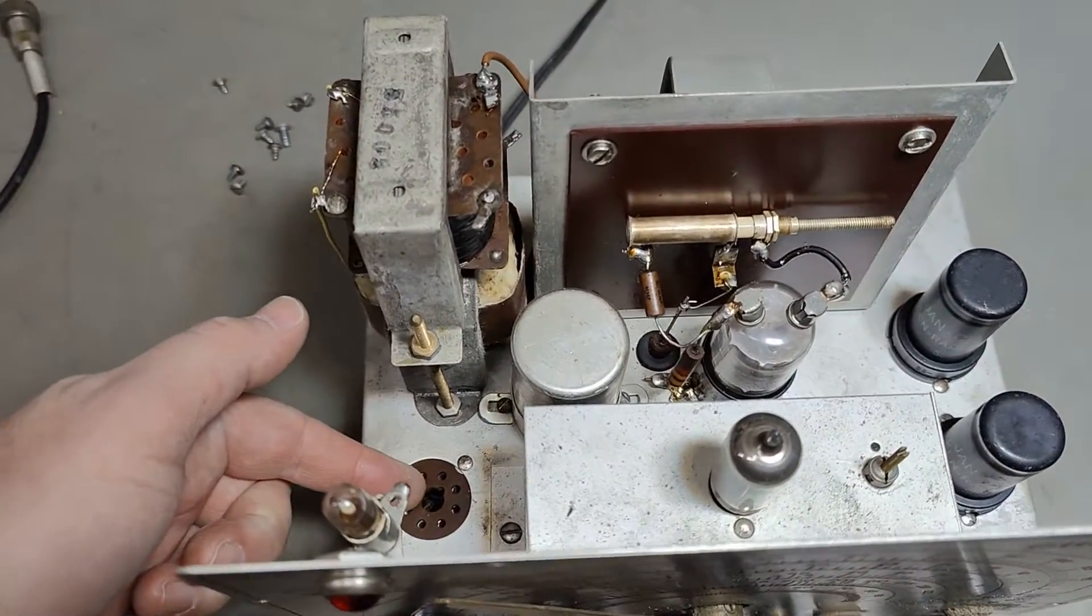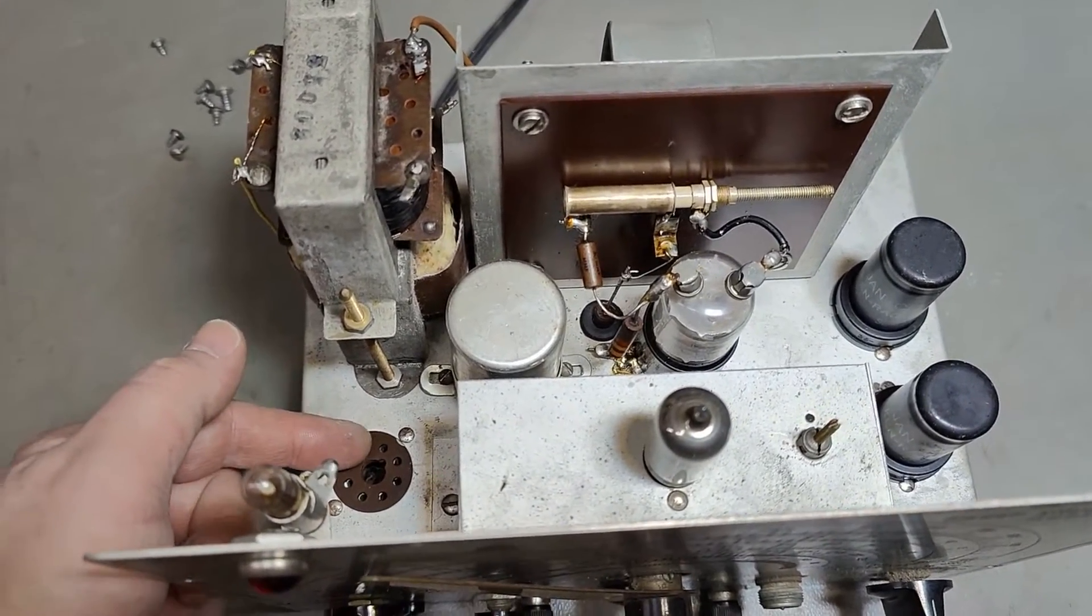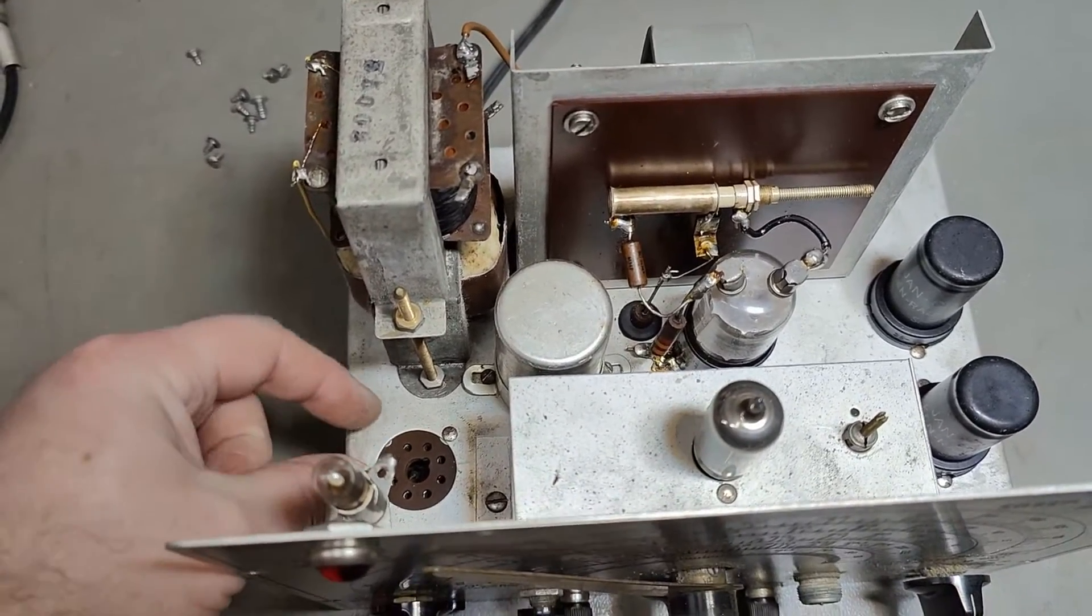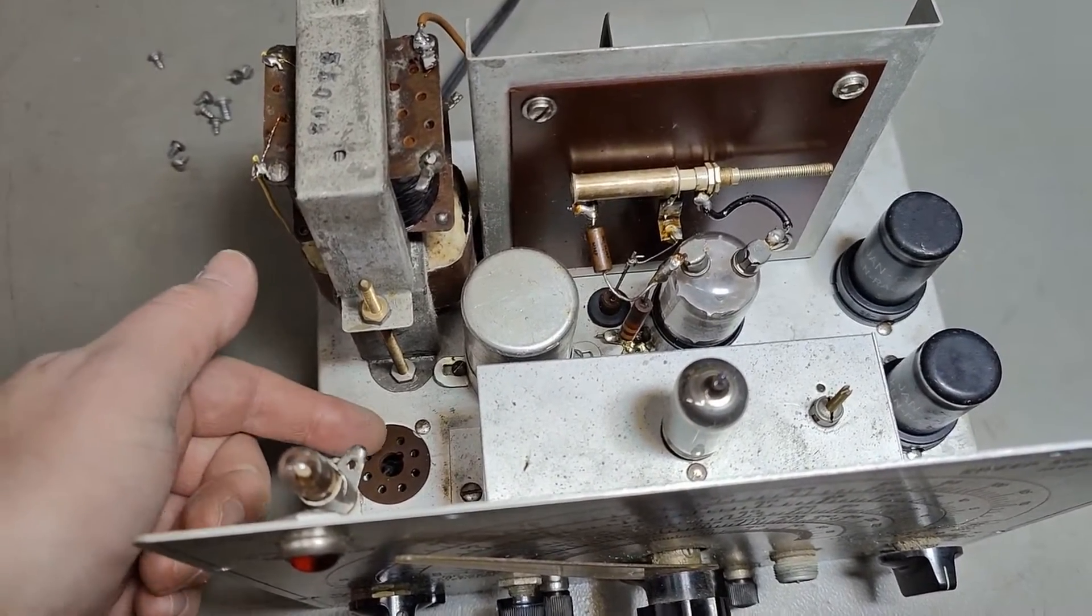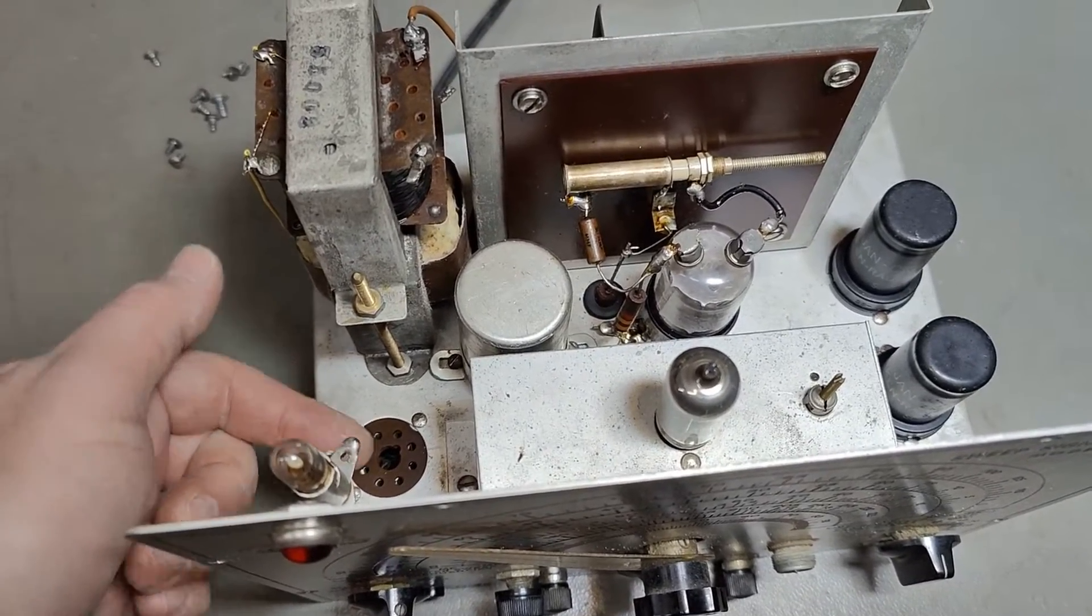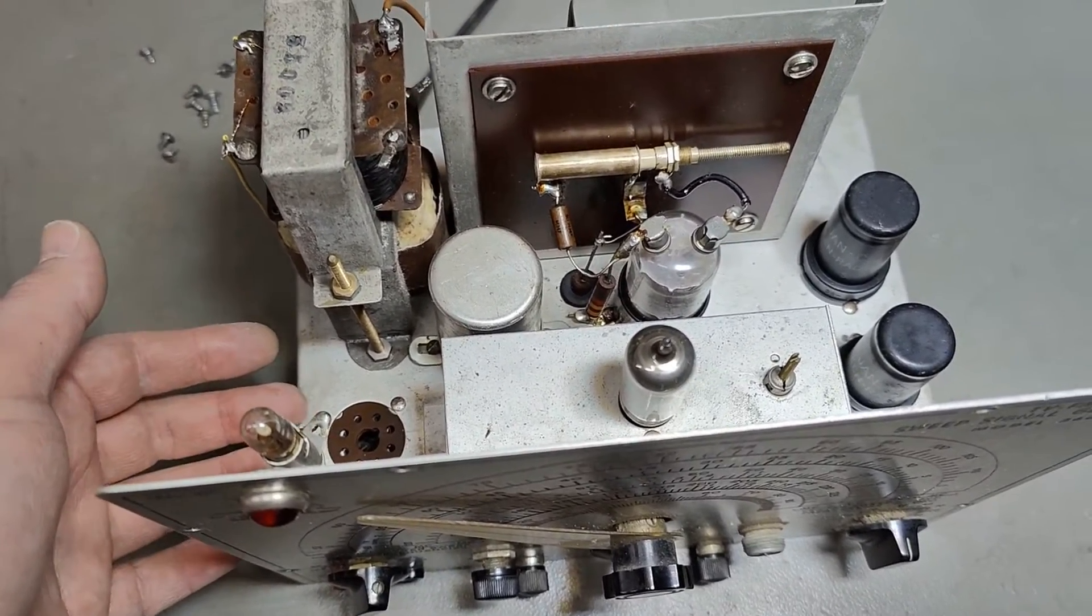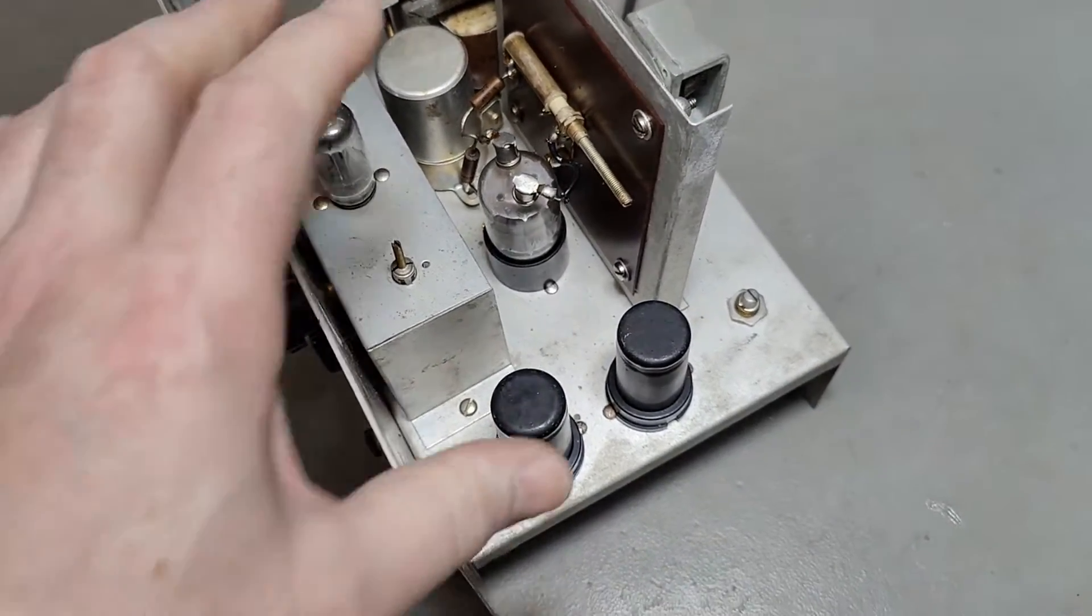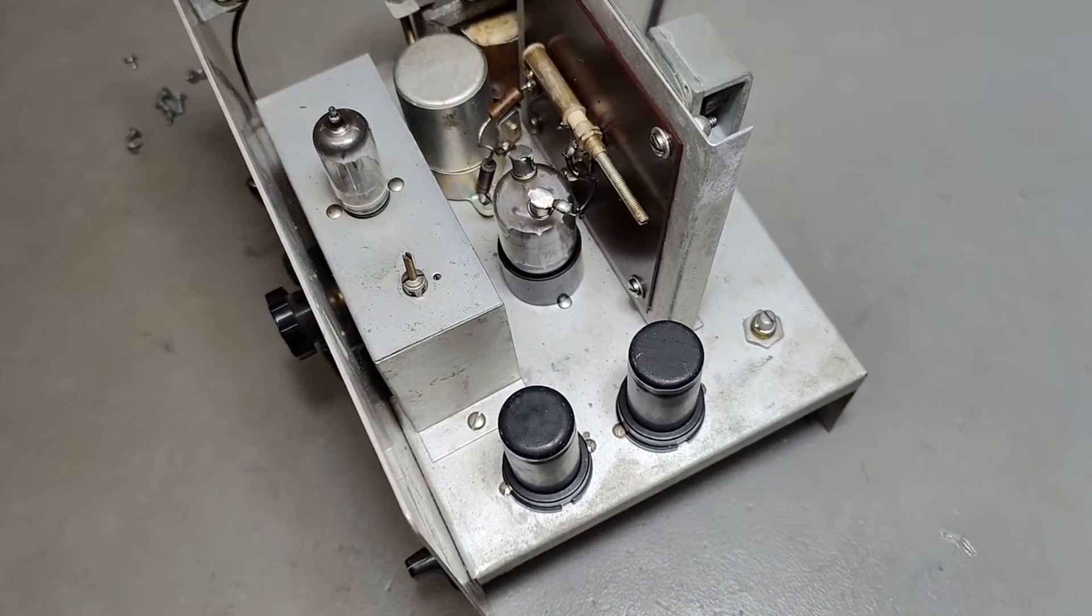And yeah, there is a tube missing here. This is the rectifier tube, a 6X5. And this is just taken out and then two little diodes put in. So that is a good way to save a lot of power.